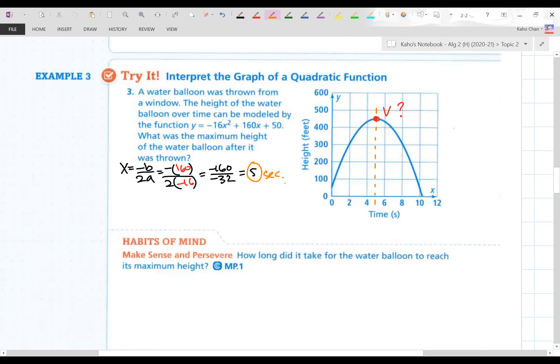But what is that height? We've got to plug in 5 into the equation. Here we go. Plug it in. These real word poems get a little bit challenging. So negative 400 plus 800 plus 50 is 450 is the maximum height. There it is. 450. How long do it take? Five seconds. We already got that earlier.